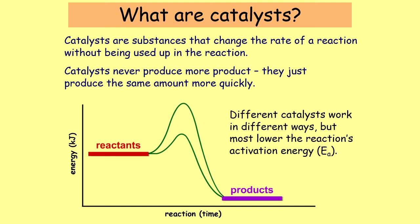A good example of this is a Bunsen burner. The reaction happening in a Bunsen burner is between the oxygen in the air and the gas coming out of the gas tap. When you mix those two things together it doesn't automatically start a chemical reaction. You need to give it a spark of heat in order for it to start. That amount of energy needed at the beginning of a reaction is called the activation energy. The lower the activation energy, the more easily a reaction starts and the quicker it happens.